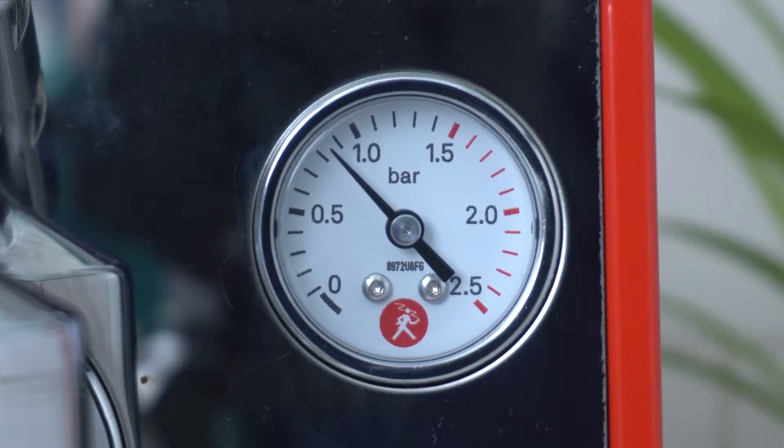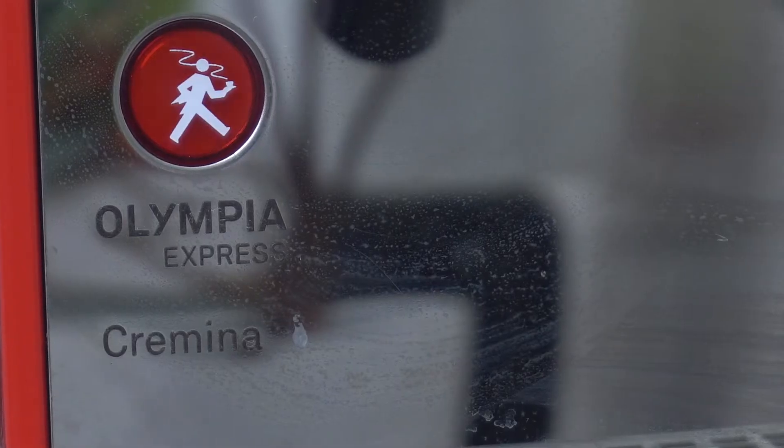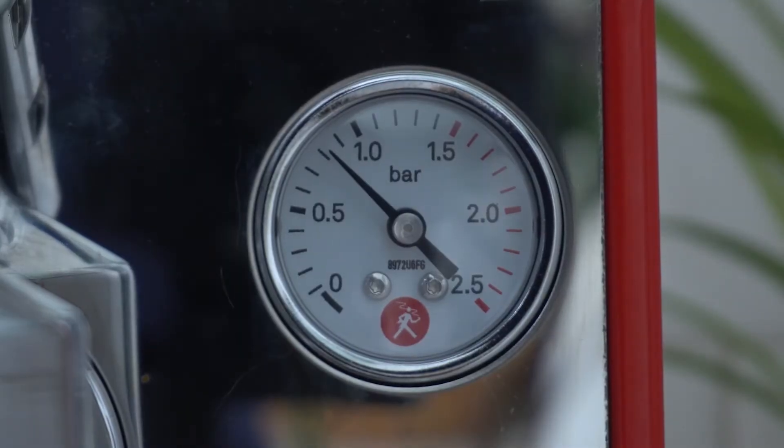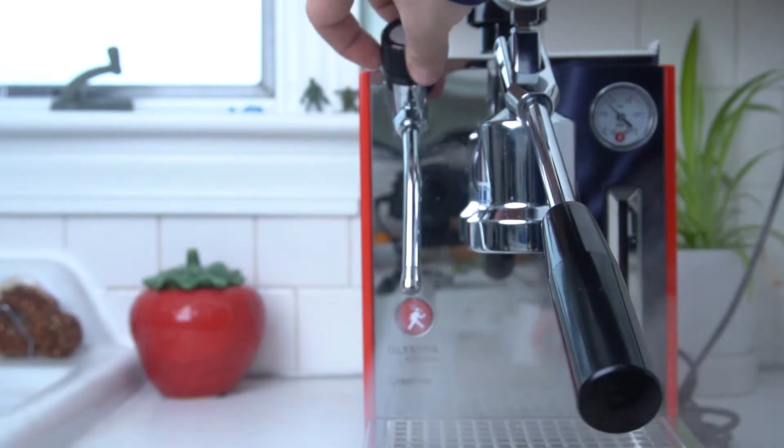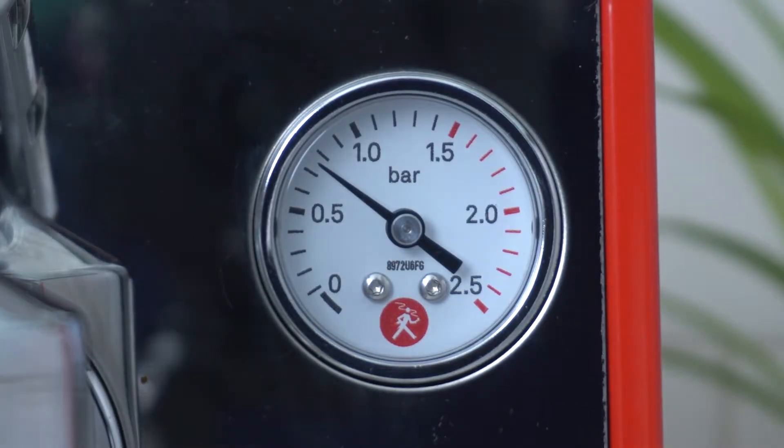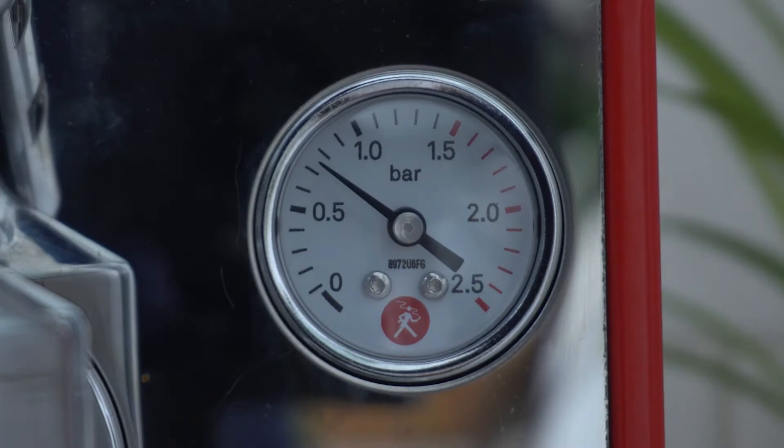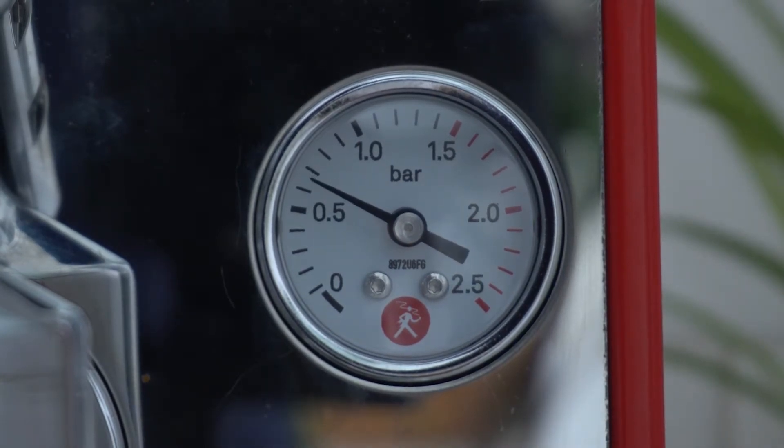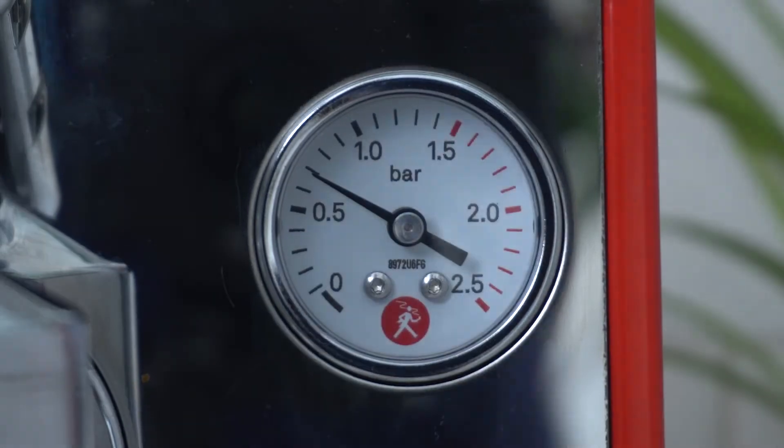When the pressure inside the boiler hits about one bar, the light turns off and you move on to the next step. The next step is to bleed false pressure from the boiler by turning on the steam wand for a couple seconds. This is because the Cremina is a single boiler machine. Be careful though, from the steam wand, hot water will shoot out at first and it can get on you. So use a towel. I burned my legs a couple times.